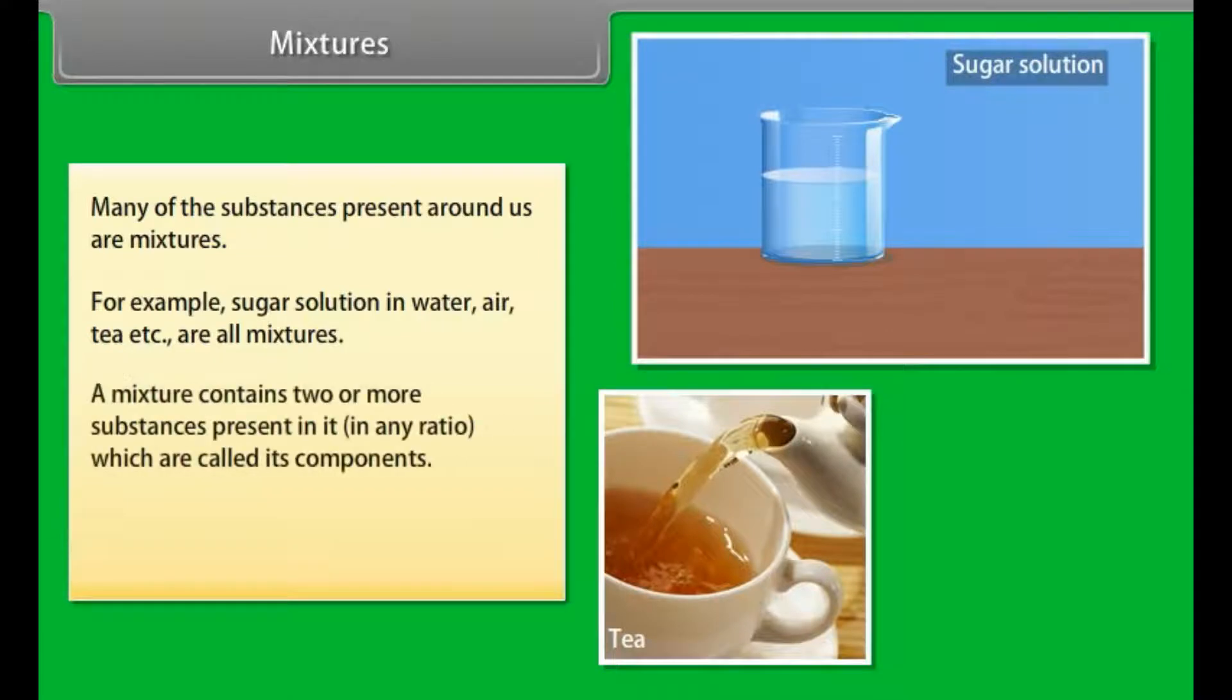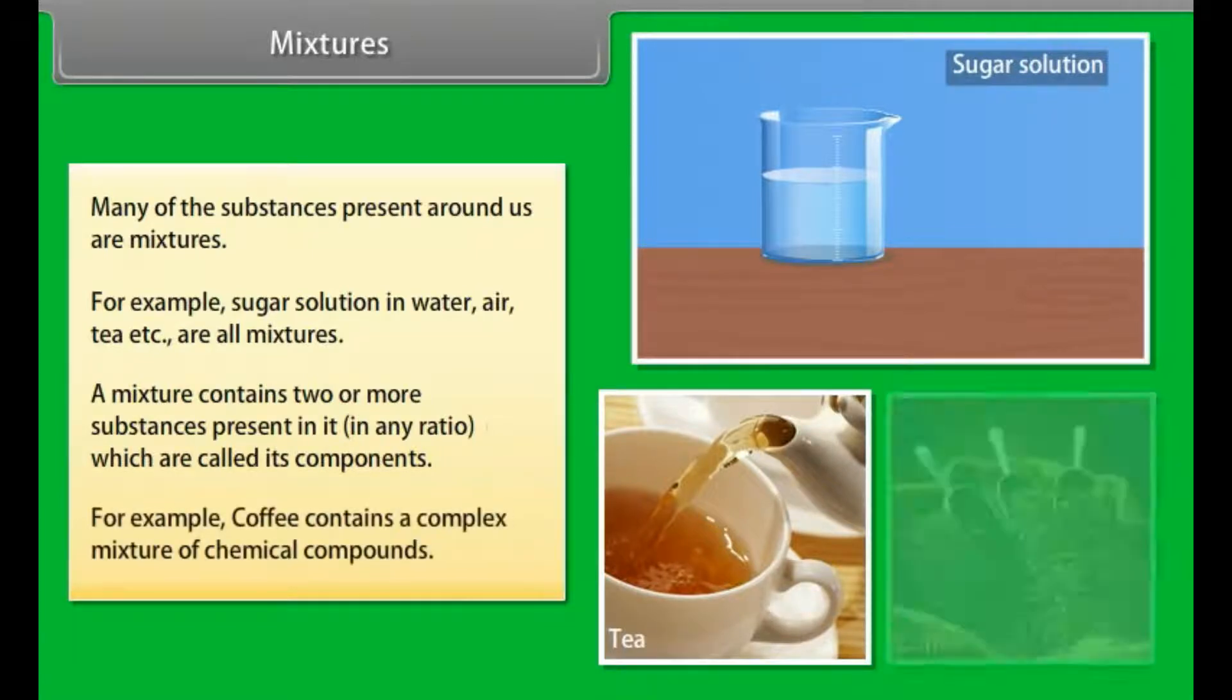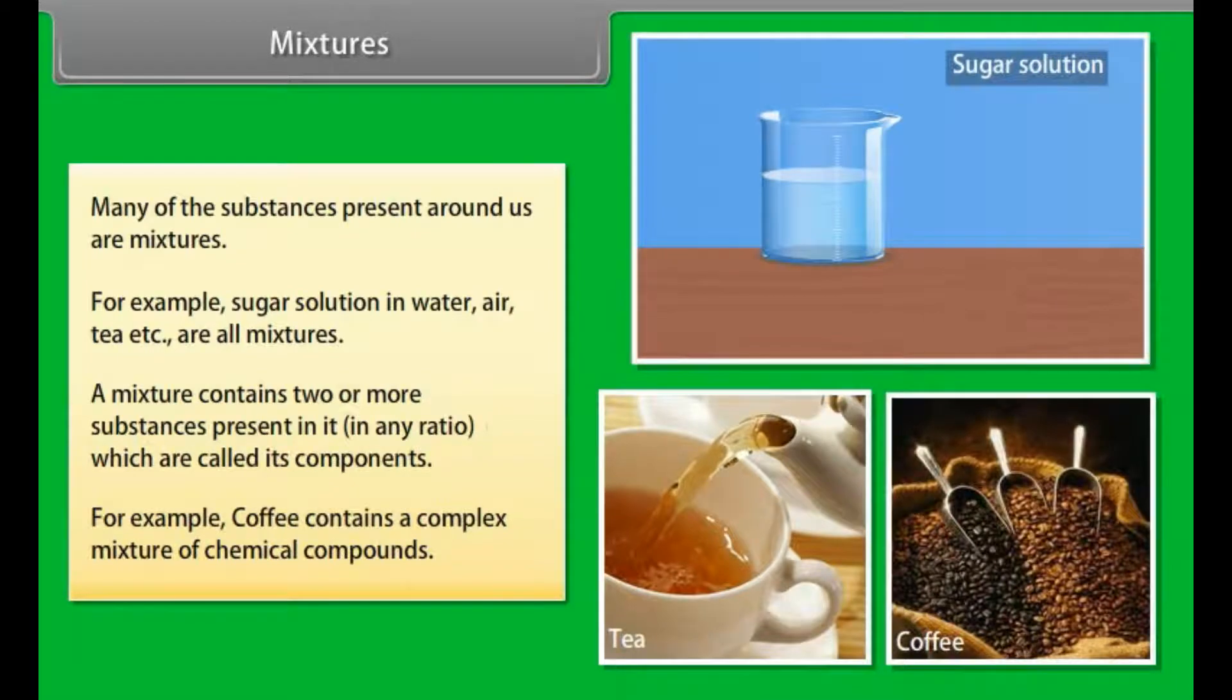A mixture contains two or more substances present in it, in any ratio, which are called its components. For example, coffee contains a complex mixture of chemical compounds.